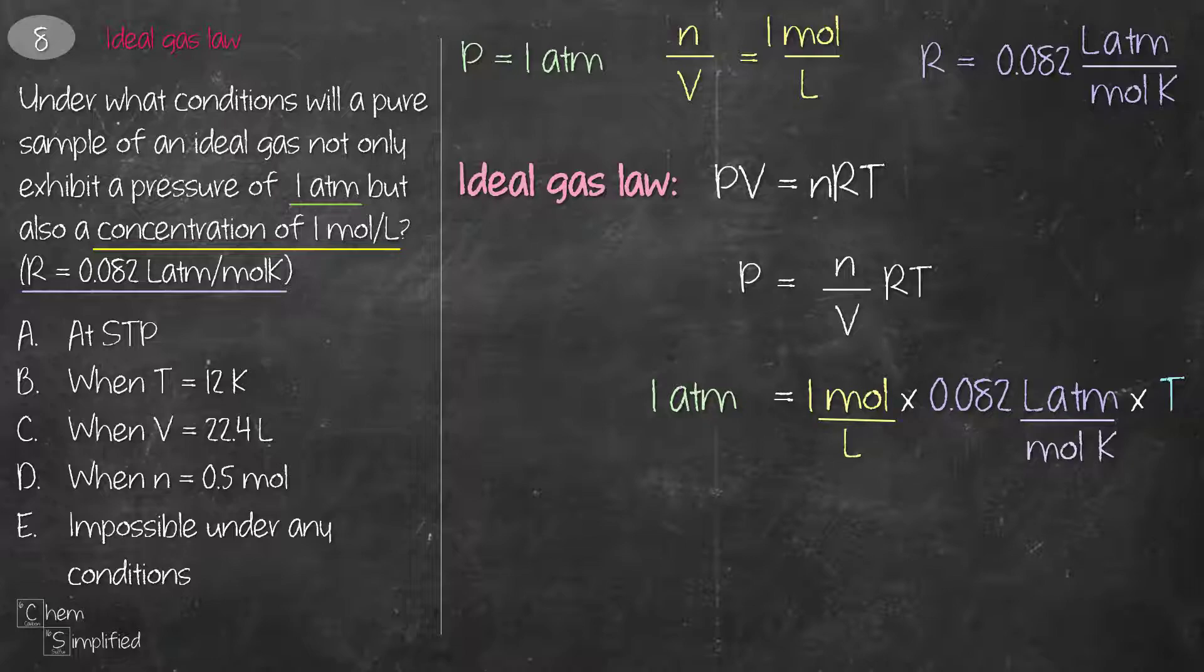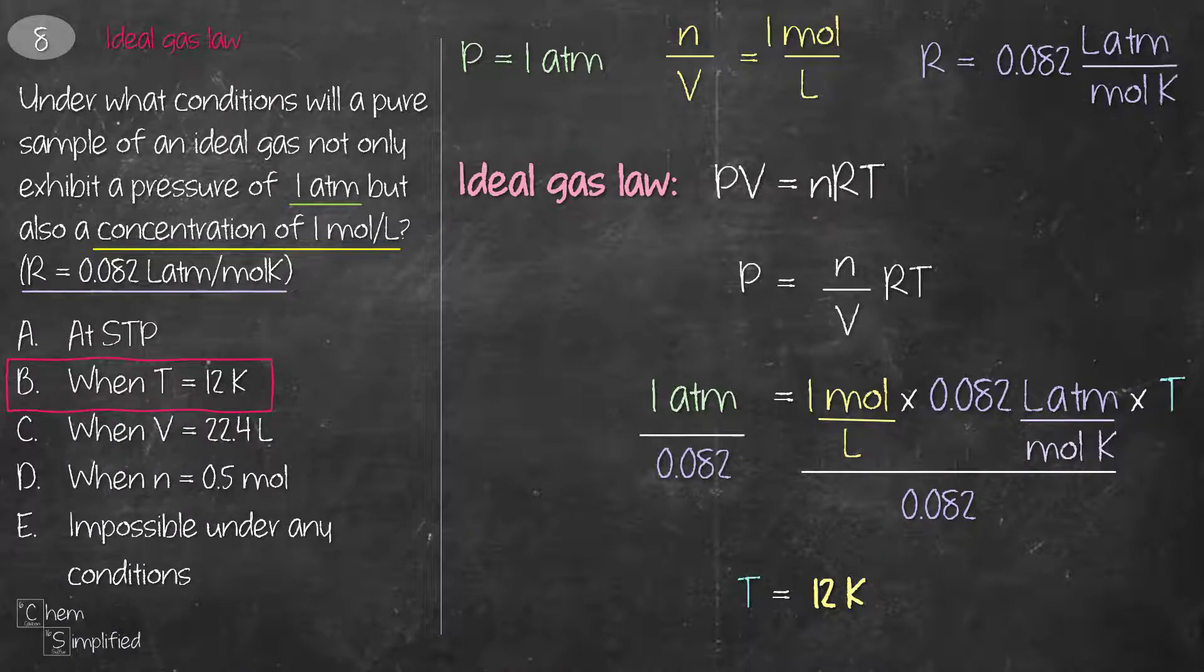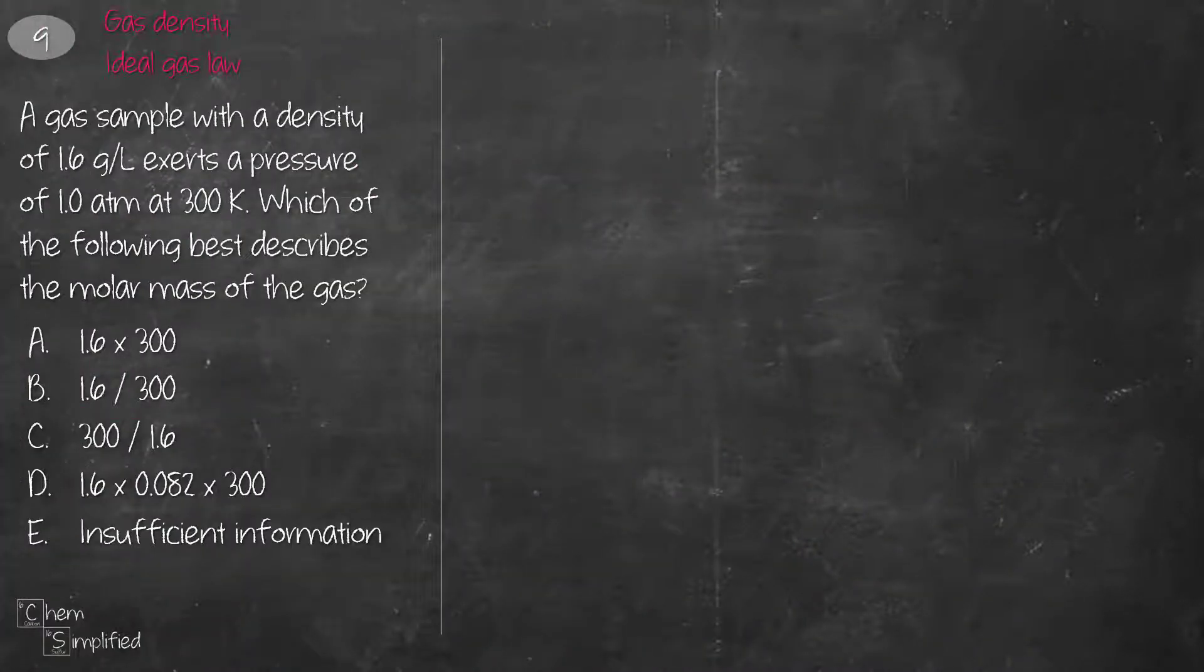In order to solve for T, we're going to do a little bit of math, divide both sides with 0.082, and that way we can solve for T, which works out to be 12 Kelvin.